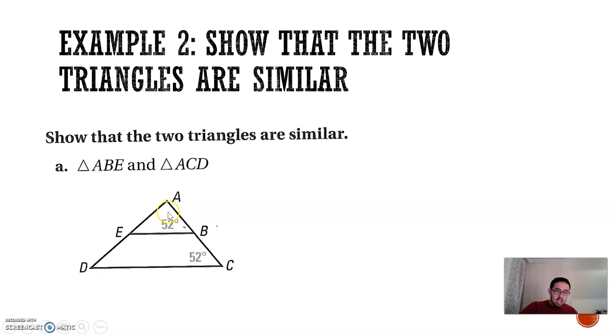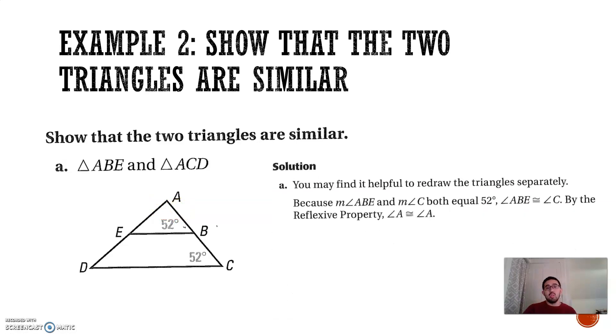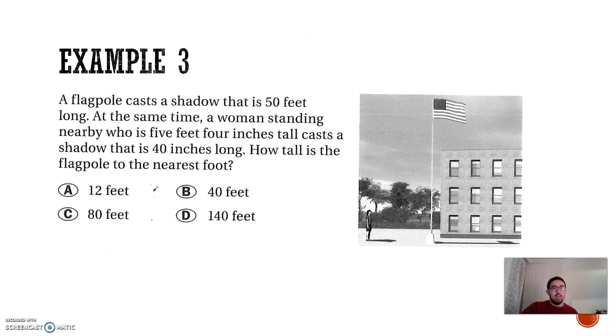ABE and ACD share the angle A. So, angle A is technically congruent to itself. So, now I have two congruent angles, so therefore the triangles are similar. Angle ABE and angle C are equal. They're both equal to 52. A is equal to itself, so therefore the two triangles must be similar. All right, let's keep going.